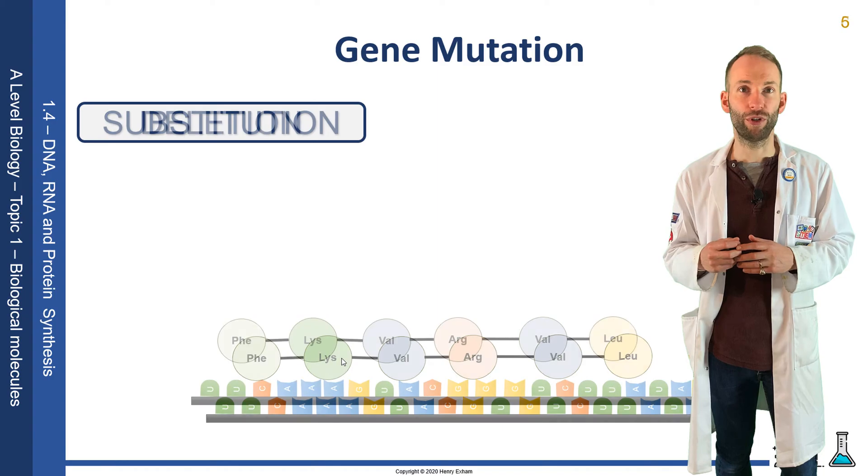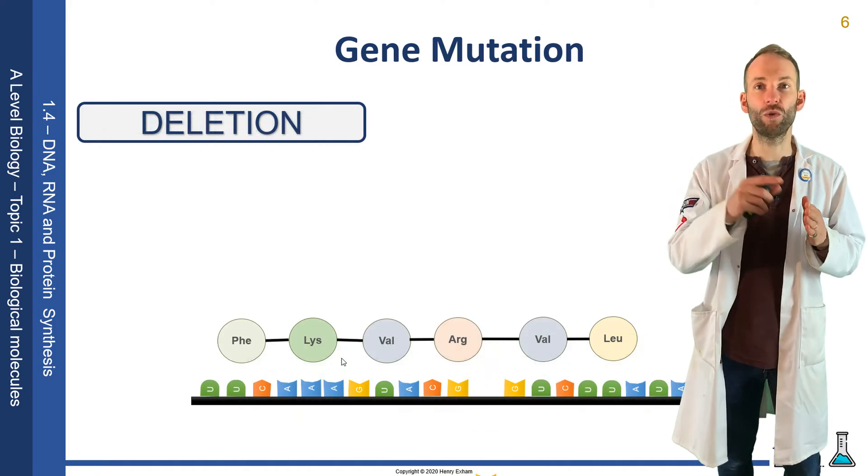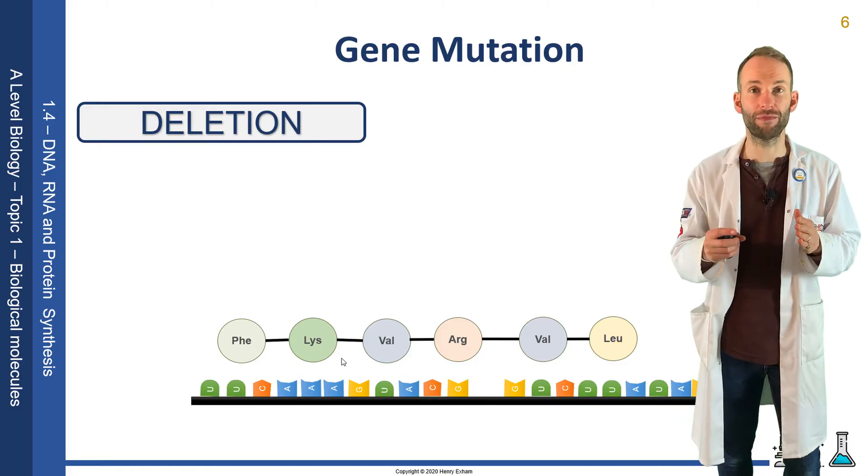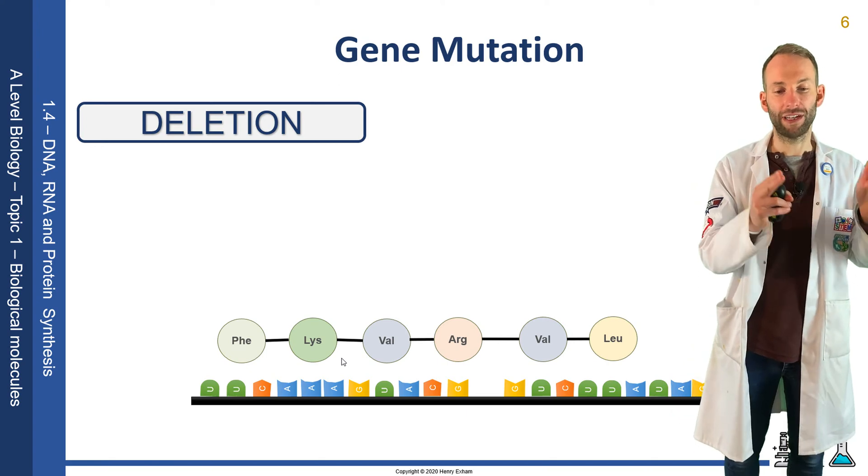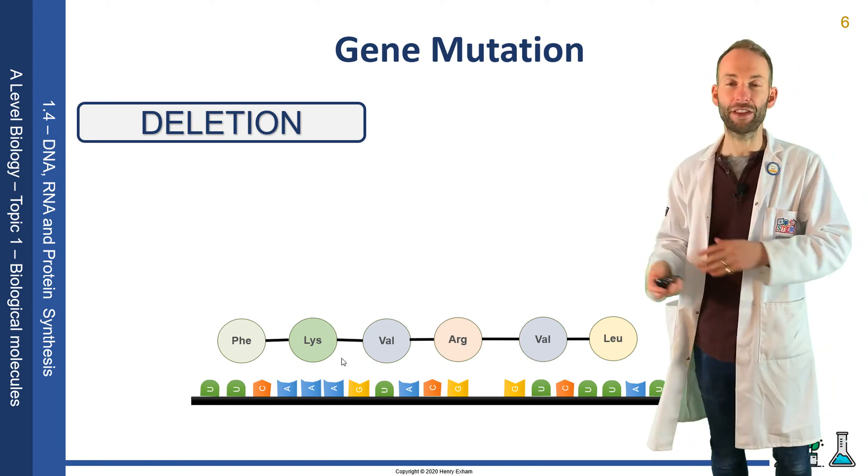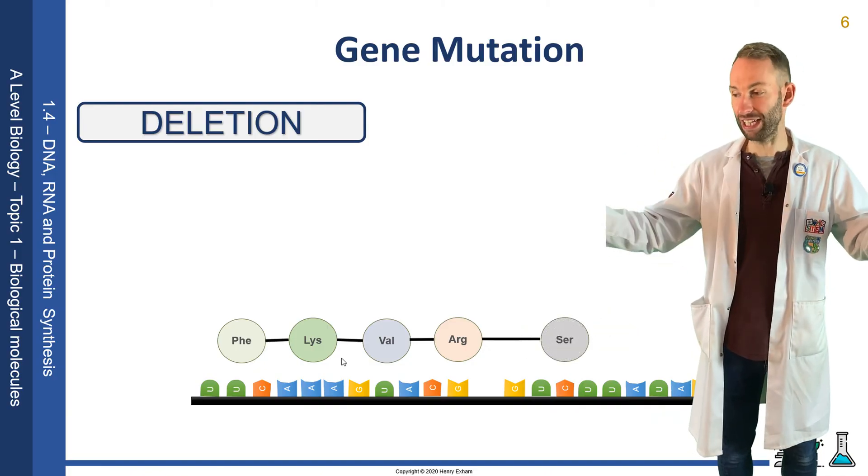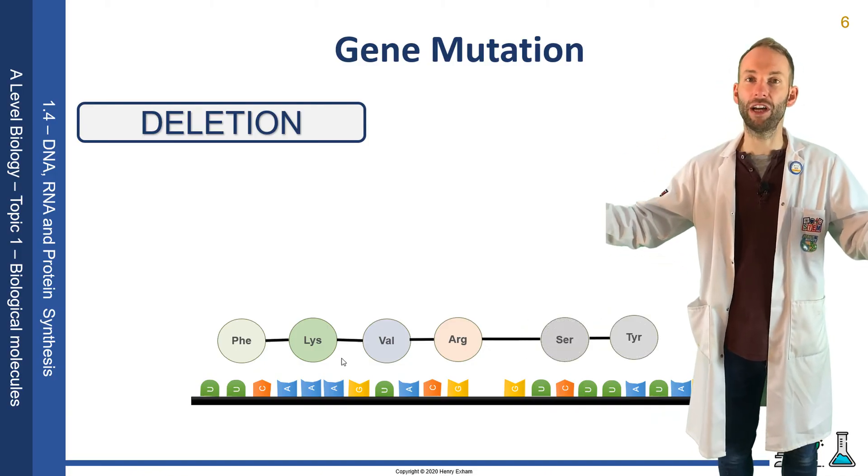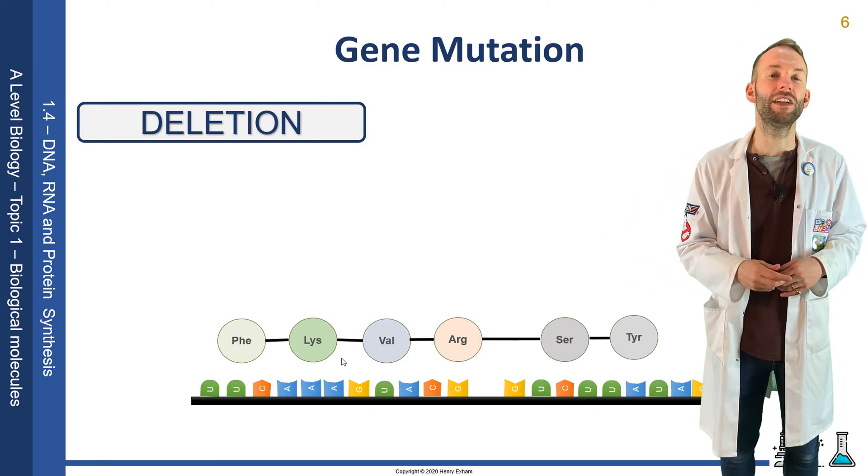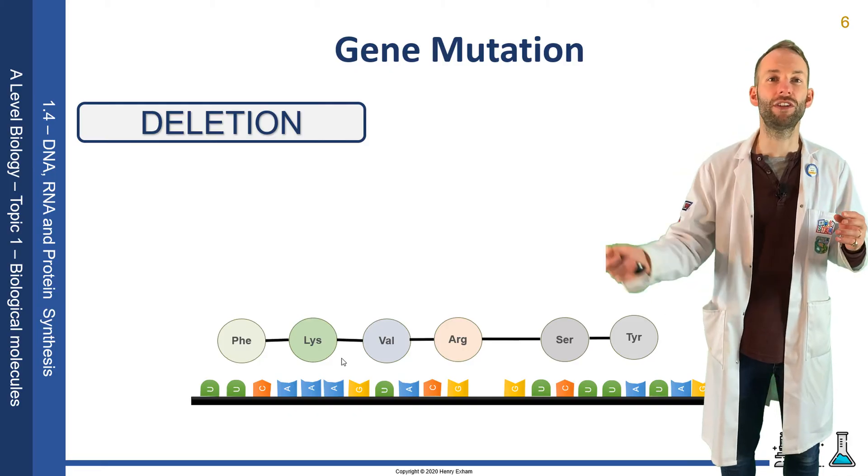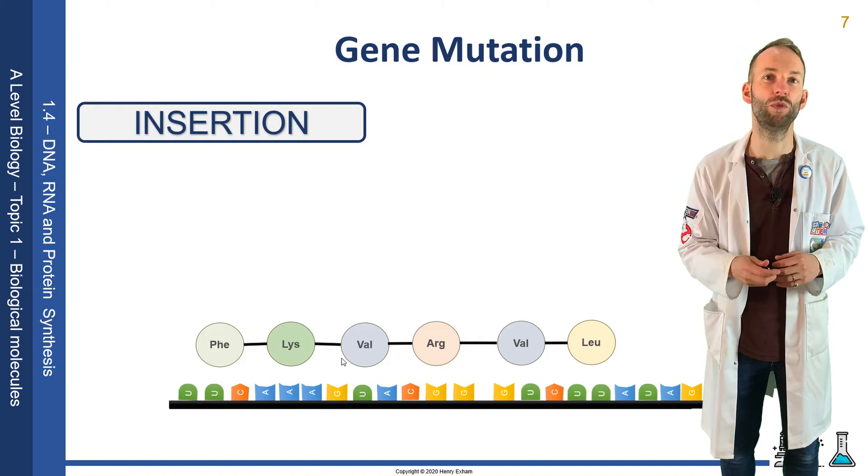In a deletion point mutation, a base is removed from the sequence. This can be very serious as it will affect all the amino acids from that point onwards because you're reading three at a time, so if you get rid of one then everything shifts back and the next one shifts, affecting all the amino acids depending on where that point mutation comes in the gene. It's similar with an insertion—you insert a base into the sequence and it will affect all the amino acids from that point onwards.